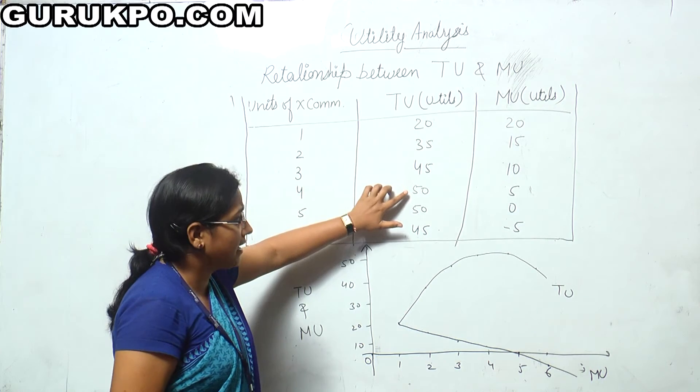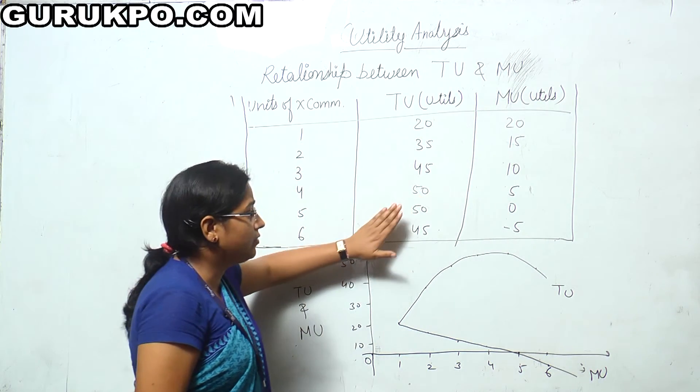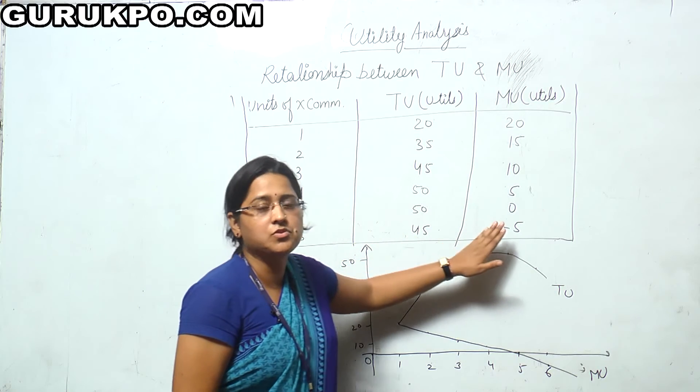Where TU is maximum, MU is zero. Where TU starts to decline, MU goes negative.